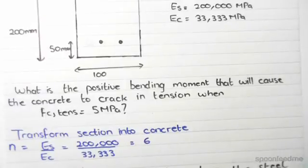So we have to divide the elastic modulus of steel by the one of concrete. So we do 200,000 divided by 33,333, we get 6. So essentially, we have to multiply the original width of the steel by six times.